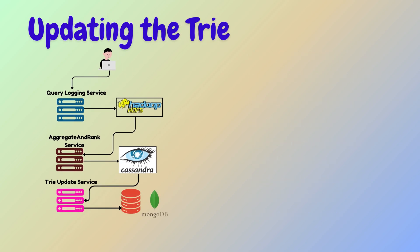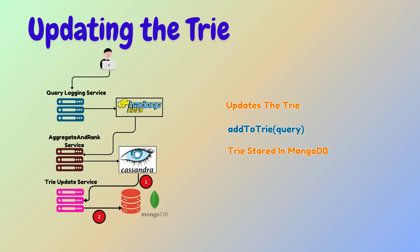After the aggregation and ranking process, the trie update service updates the trie with the most frequent and relevant search terms by invoking the add-to-trie API. The trie is stored in a NoSQL database like MongoDB, allowing it to efficiently manage dynamic, large-scale search terms. By following this approach, they efficiently update the trie while maintaining optimal performance and resource usage, ensuring the system can handle updates at Google's massive scale.